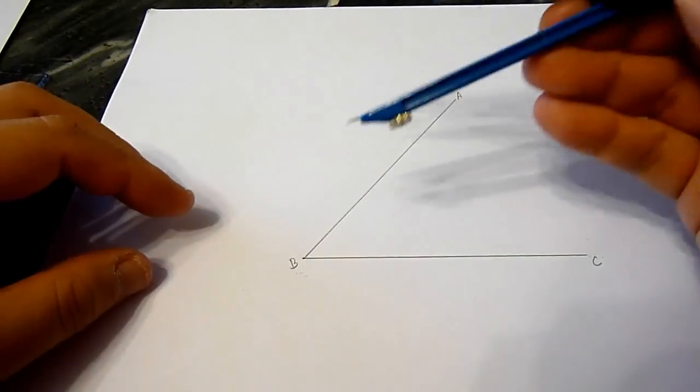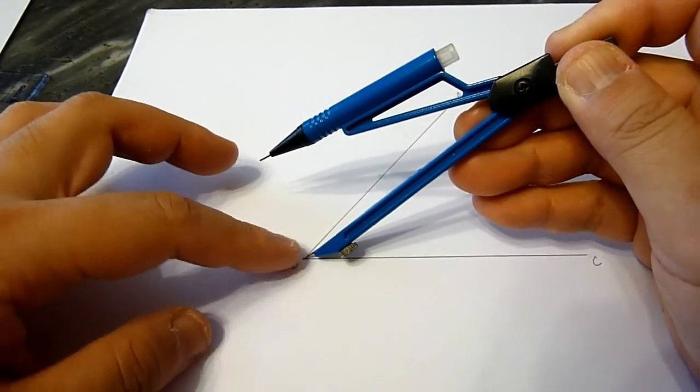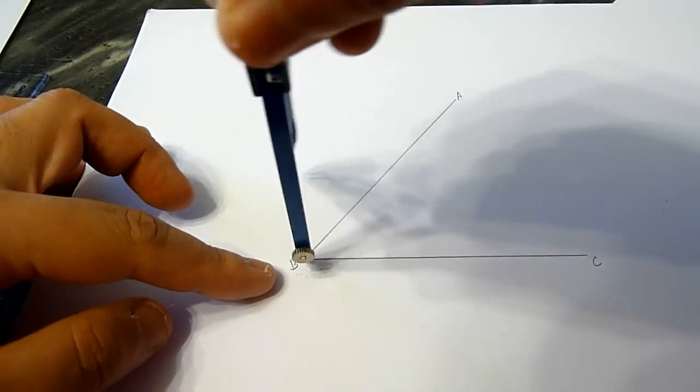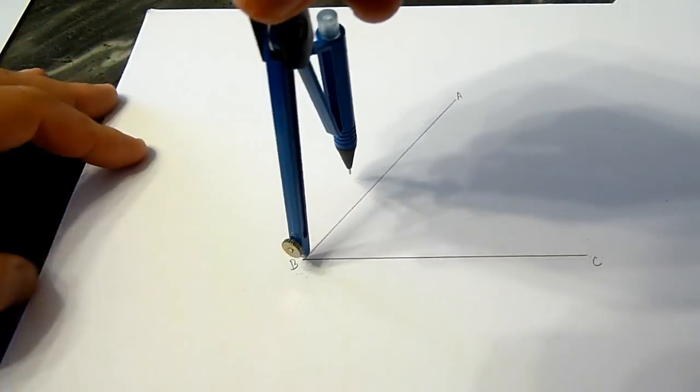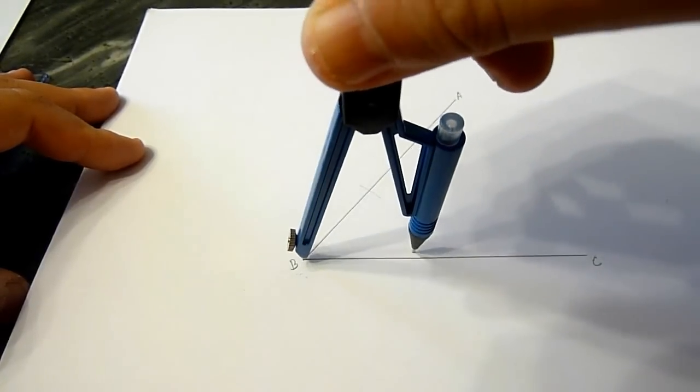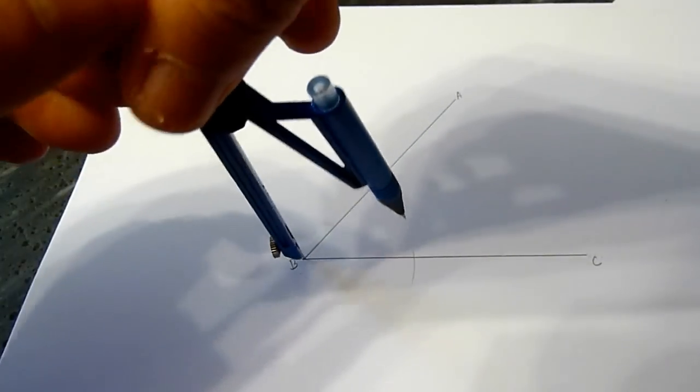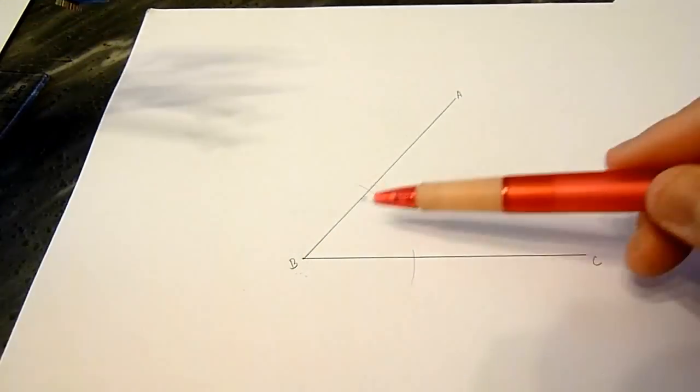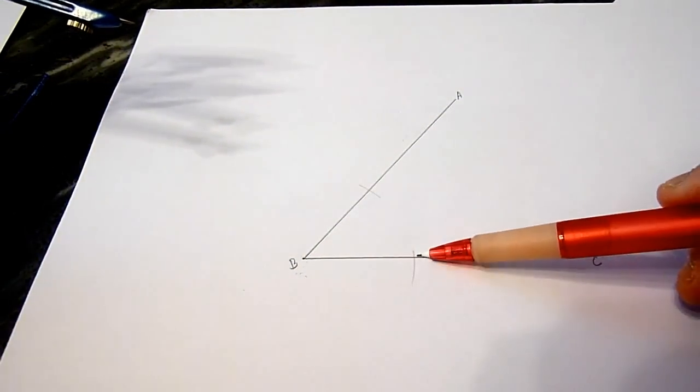First, we place the sharp end of the compass at the angle, the tip here, and we mark the arc on both arms of the angle. You will notice that the distance between the tip to the arc is the same for both.